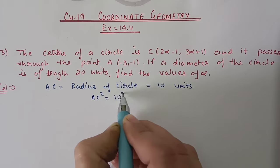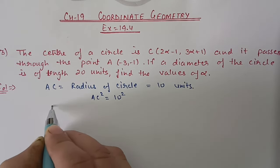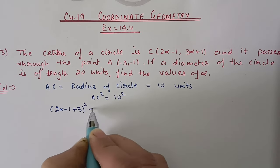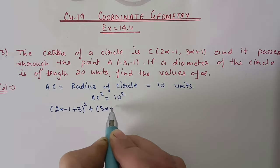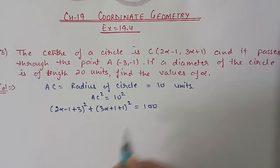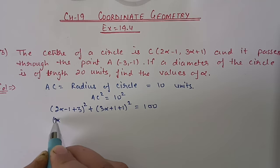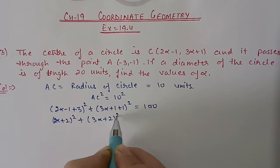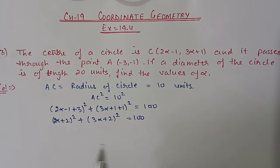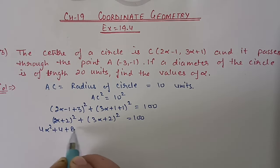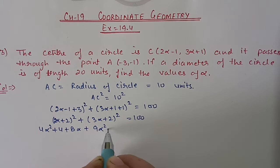AC² = (2α−1 − (−3))² + (3α+1 − (−1))² = 100. This simplifies to (2α+2)² + (3α+2)² = 100. Applying the (a+b)² formula, we get 4α²+ 8α + 4 + 9α² + 12α + 4 = 100.